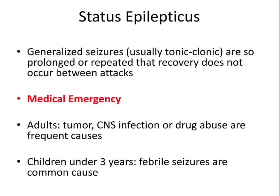Status epilepticus is a kind of generalized seizure that is prolonged or repeated so that recovery doesn't occur between individual seizures. The kind of seizure that usually produces status epilepticus is the tonic-clonic or grand mal seizure. This is a medical emergency. Causes in adults include tumors, CNS infection, or drug abuse. In children under three years, febrile seizures — having a fever and seizing — are common causes.